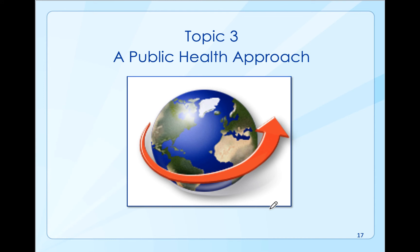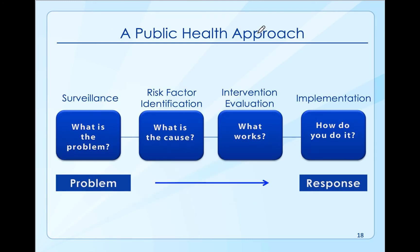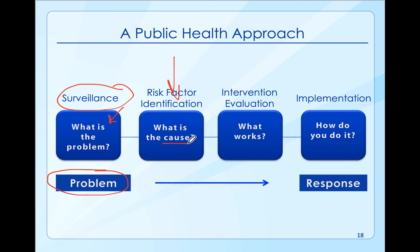The next topic is number three: the public health approach. When we look at the public health approach, we're constantly surveilling — asking: what is the problem? We look at data and evidence, so data analysis is key. Then we look at risk factors: what is causing this, what is the etiology of this problem? Then we evaluate what works to address or eliminate the problem — we like to go upstream and prevent it before it occurs.